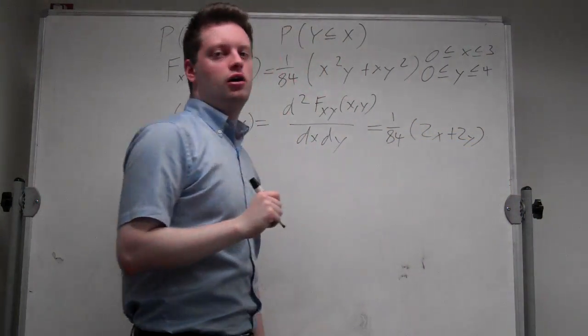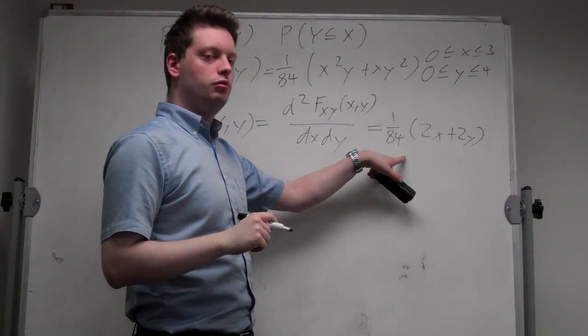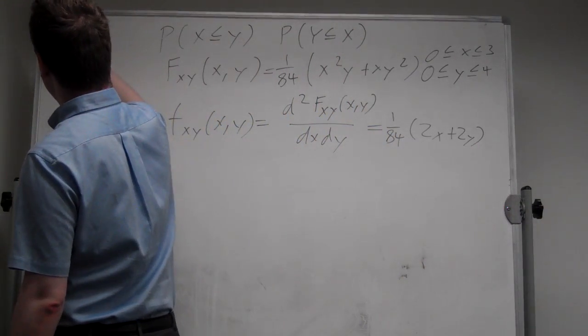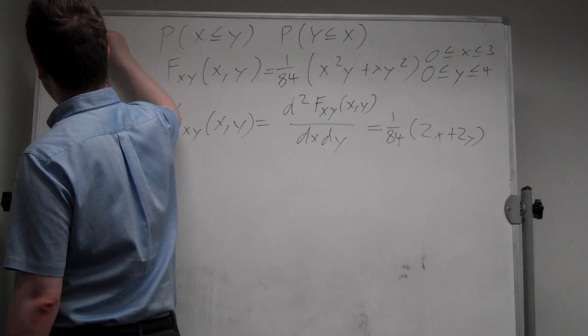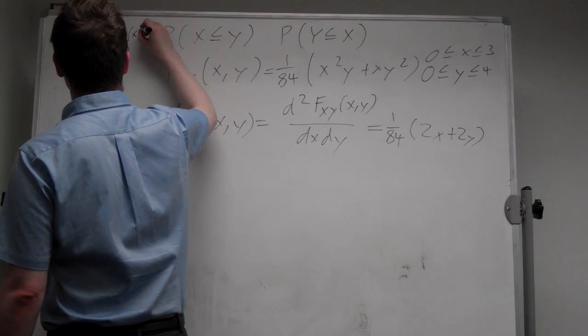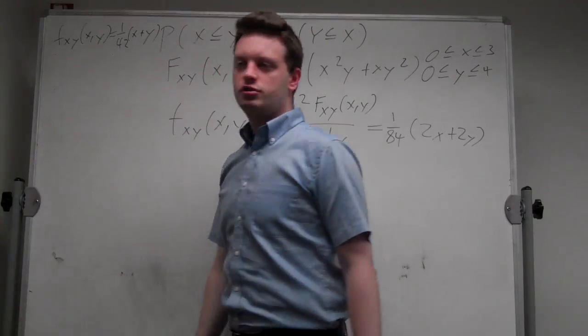And that's our probability density function. Let me rewrite this function up here. So f(x,y) is equal to 1 over 42 times (x plus y) to conserve some space.